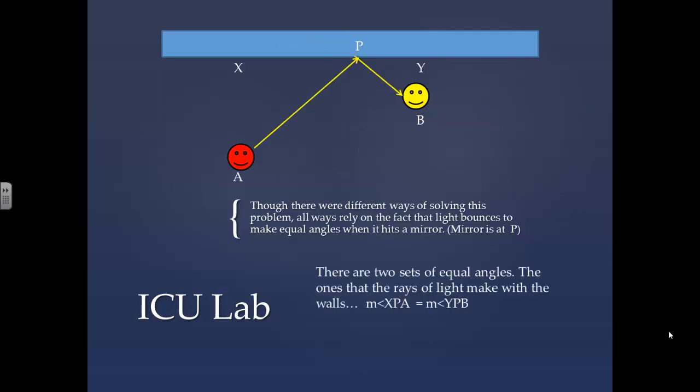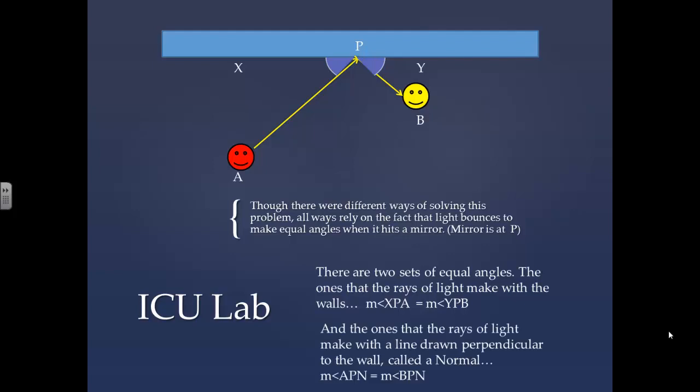There are two sets of equal angles. The ones that the rays of light make with the walls, measure angle XPA and measure angle YPB. And the ones that the rays of light make with a line drawn perpendicular to the wall called a normal, measure angle APN and measure angle BPN.